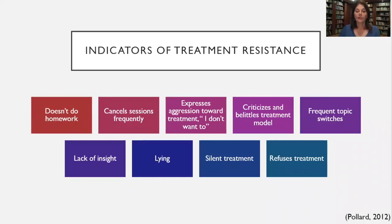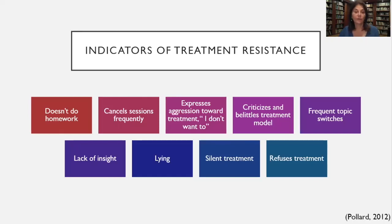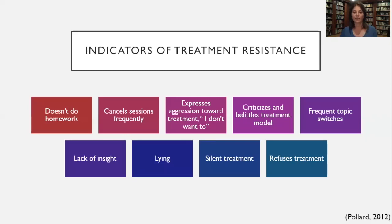Here are some indicators of treatment resistance: people are canceling sessions, not doing homework between sessions, telling you they don't want to do this, criticizing the treatment, changing topics, refusing to come in, making excuses. We have to stop and re-engage the person periodically when we see treatment resistance. More than most disorders in BDD, there's constant engagement and re-engagement with treatment until the person is fully engaged. One has to be very aware of treatment resistance.